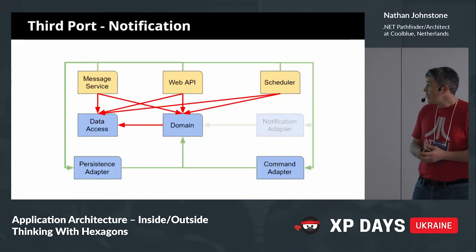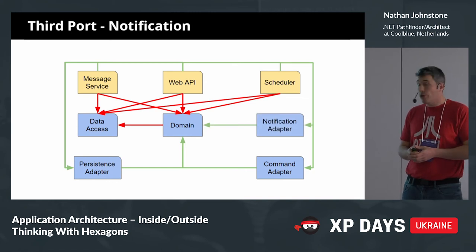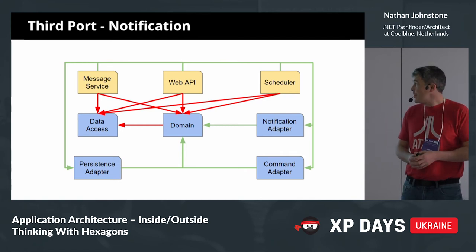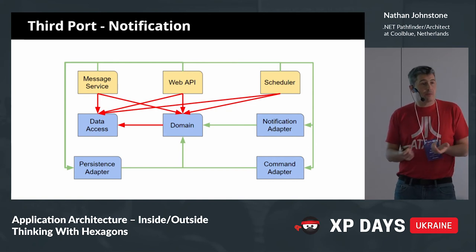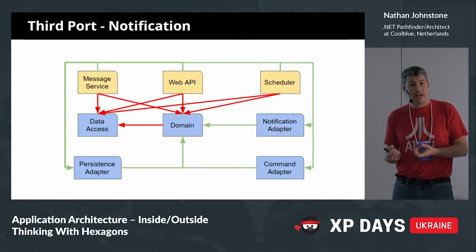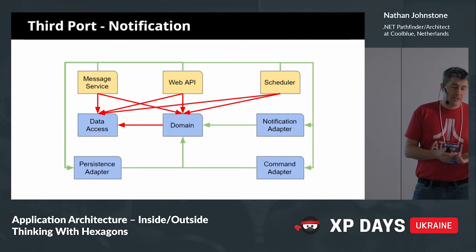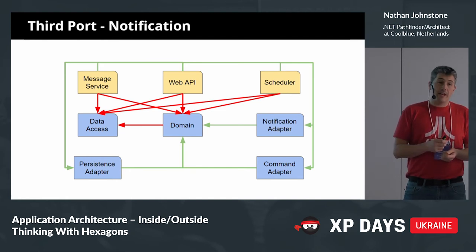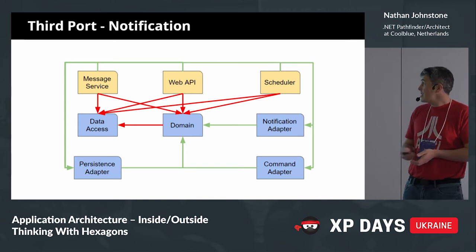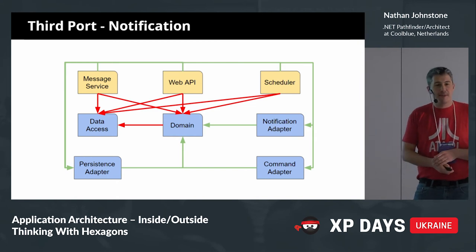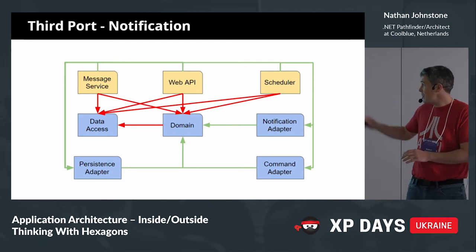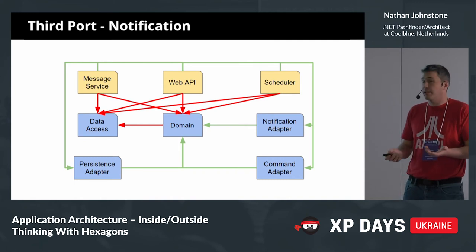The third port we implemented was a notification adapter. This also used RabbitMQ, but we didn't put it in the same assembly as the command adapter — the reasons for their existence were different. One was about pushing messages out to notify; one was about receiving notifications. We created a notification adapter and also put RabbitMQ in there. Importantly, there were no references between them — even though there was some common logic, we copy-pasted code between them. We did not want a shared RabbitMQ common class, because there's no value in coupling to a common implementation for implementation details.